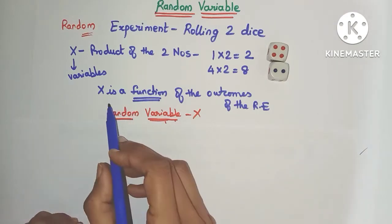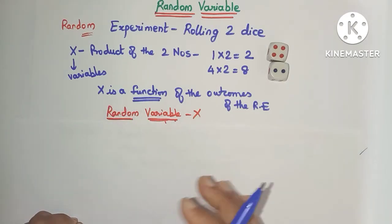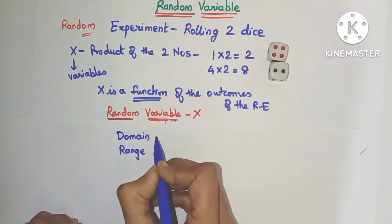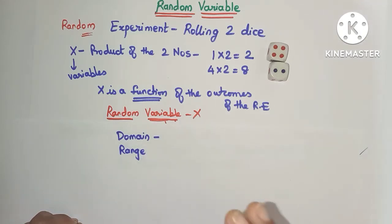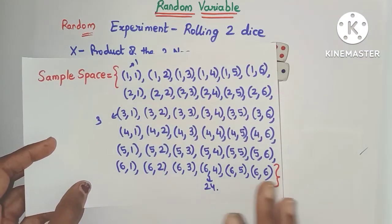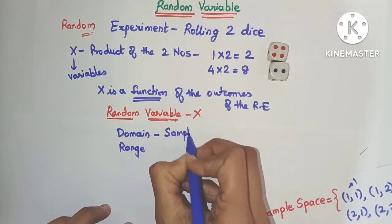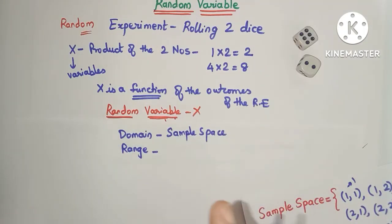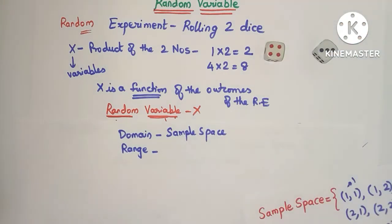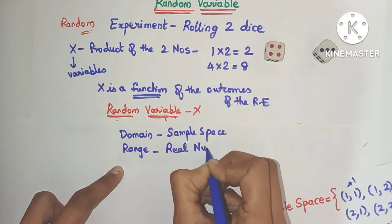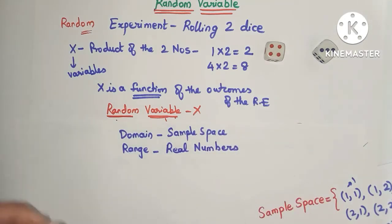Since x is a function, every function should have a domain as well as a range. The domain will be the sample space of the random experiment — in this case, the set of all pairs of numbers from 1 to 6. The range will be all real numbers. For example, throwing the dice and getting 4 and 3 gives 4 into 3 which is 12, a real number.